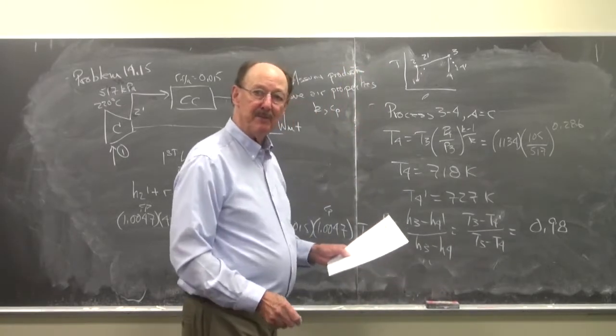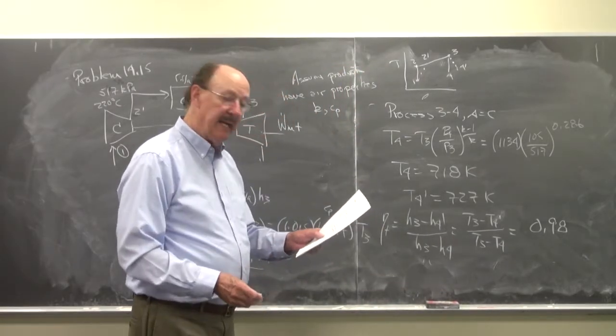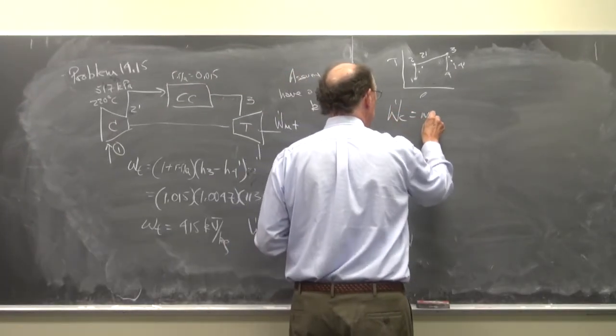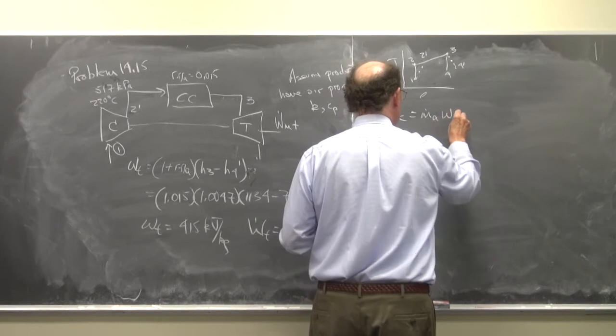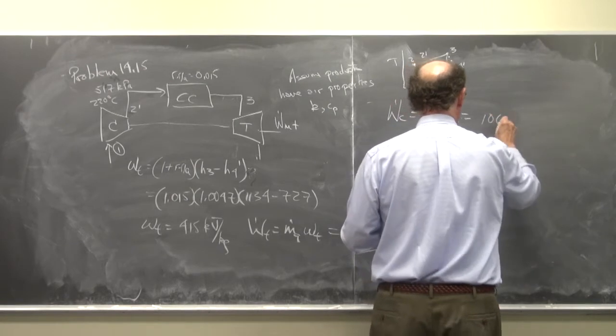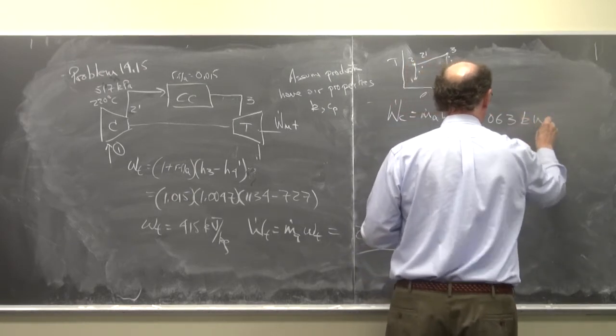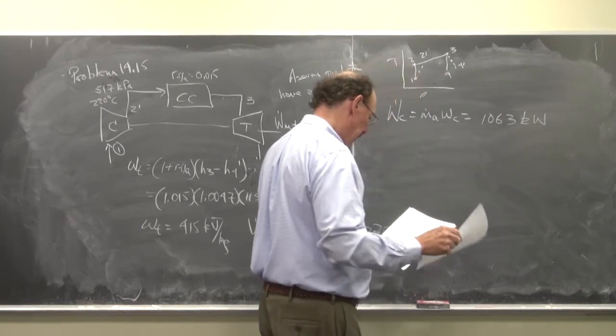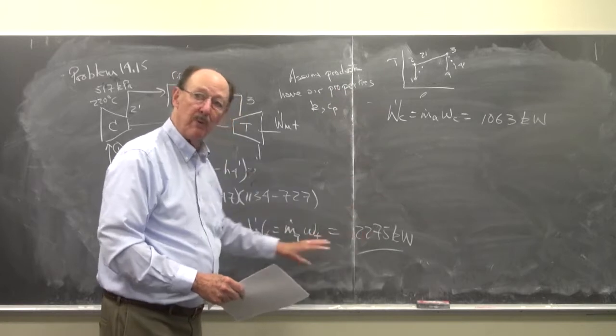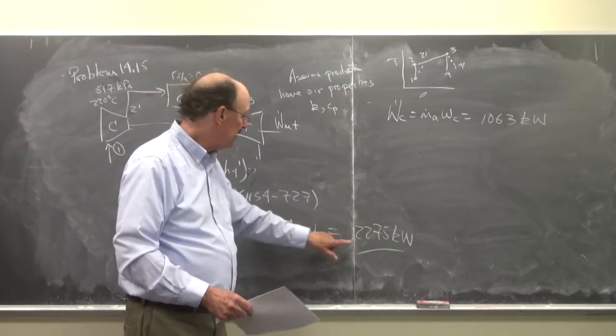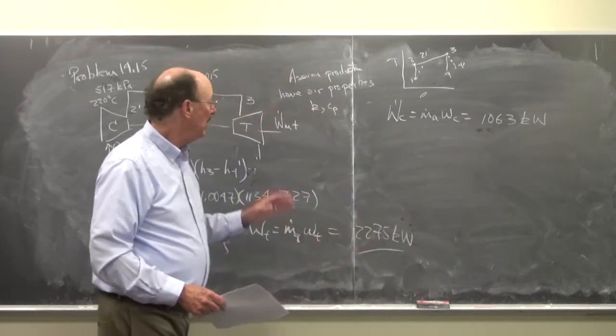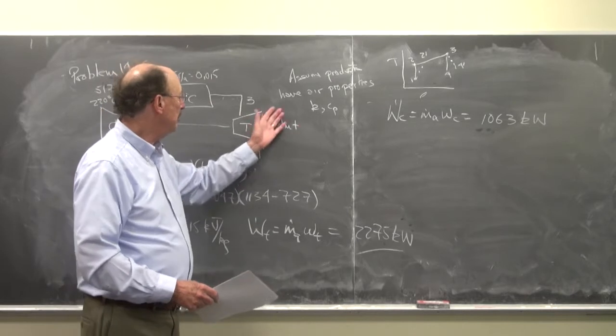So it's ridiculously high efficiency. But that's what we have. And so now I can find the turbine work. W dot T is M dot A times WT. And that's equal to 1063 kilowatts. And so this is what we were asked to find in terms of the problem statement. So this is the total power produced. 1063 goes to drive the compressor. The rest is left over to drive the generator.